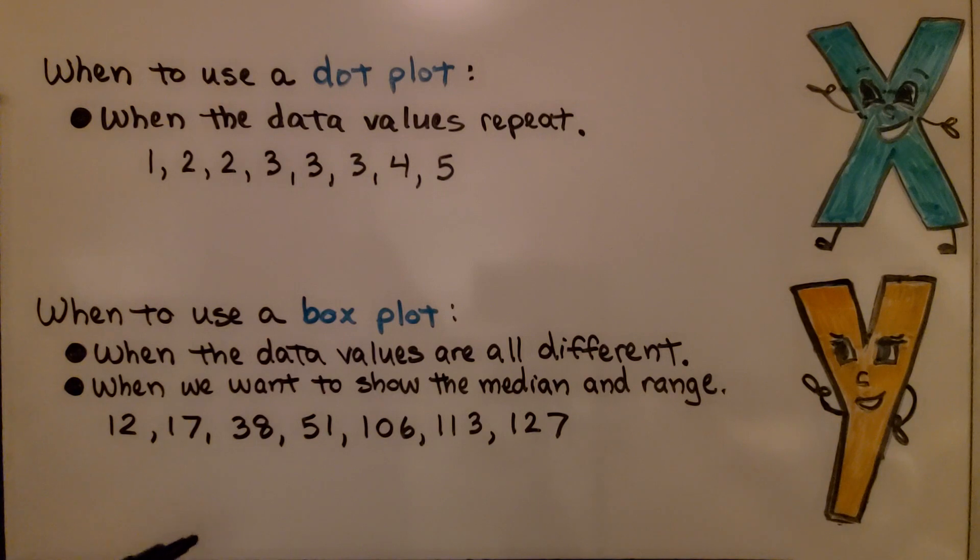When to use a box plot? When the data values are all different, when we want to show the median and the range. These are our data values. If we had put these in a dot plot, we would have just had one dot above each number. That wouldn't make sense. This would be best for these data values to be in a box plot.